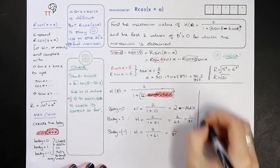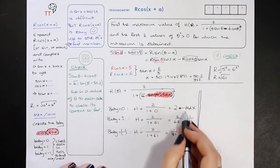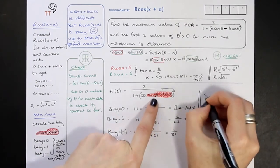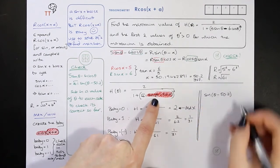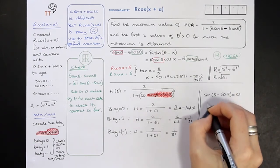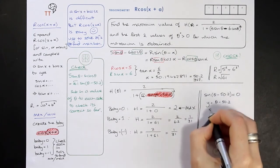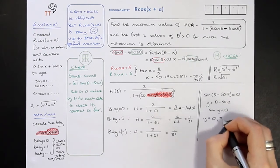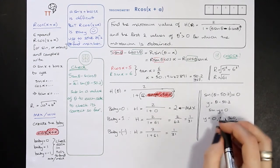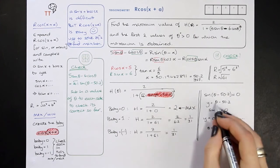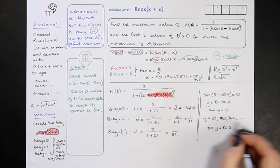Now we need to find out when that maximum occurs. The maximum is 2 and it occurs when the baby is 0, so we need sin(θ − 50.2) = 0. Let y = θ − 50.2 and solve sin(y) = 0. That gives y = 0°, 180°, 360°, etc. Now undo the substitution: θ = y + 50.2, so we add 50.2 to all of those.